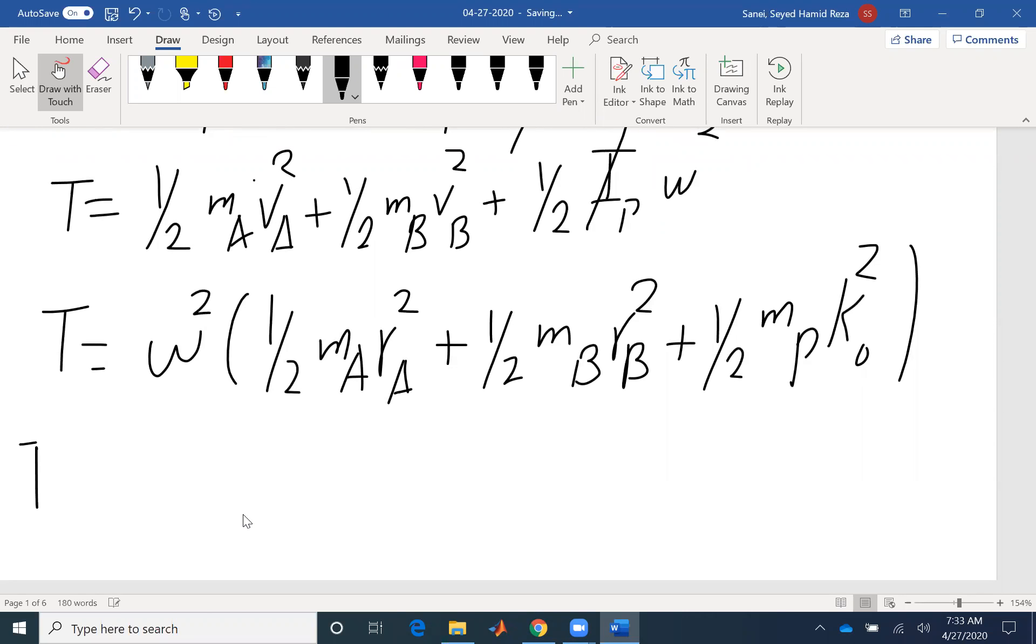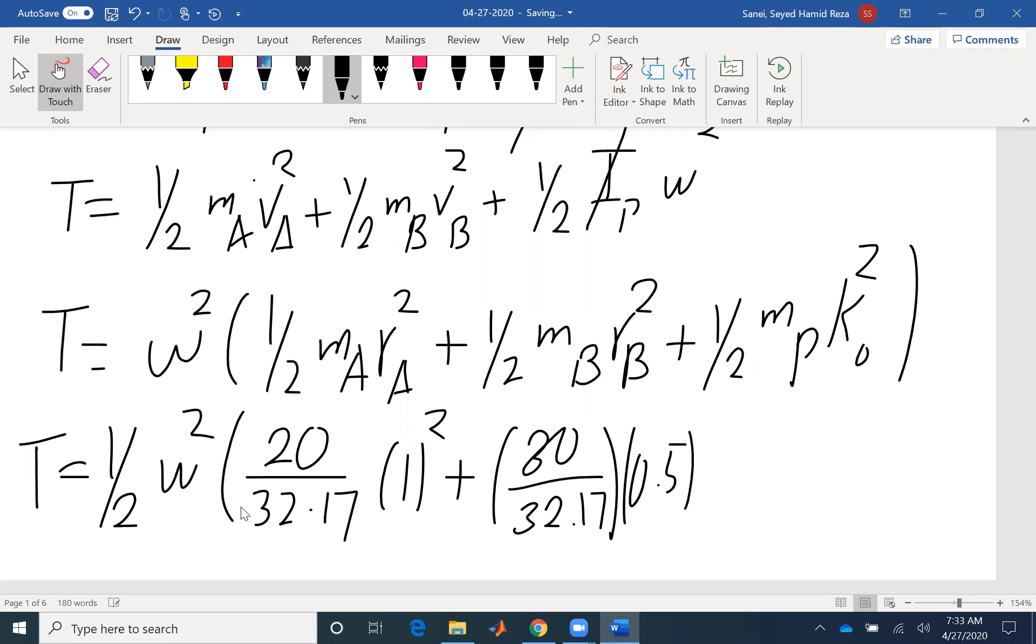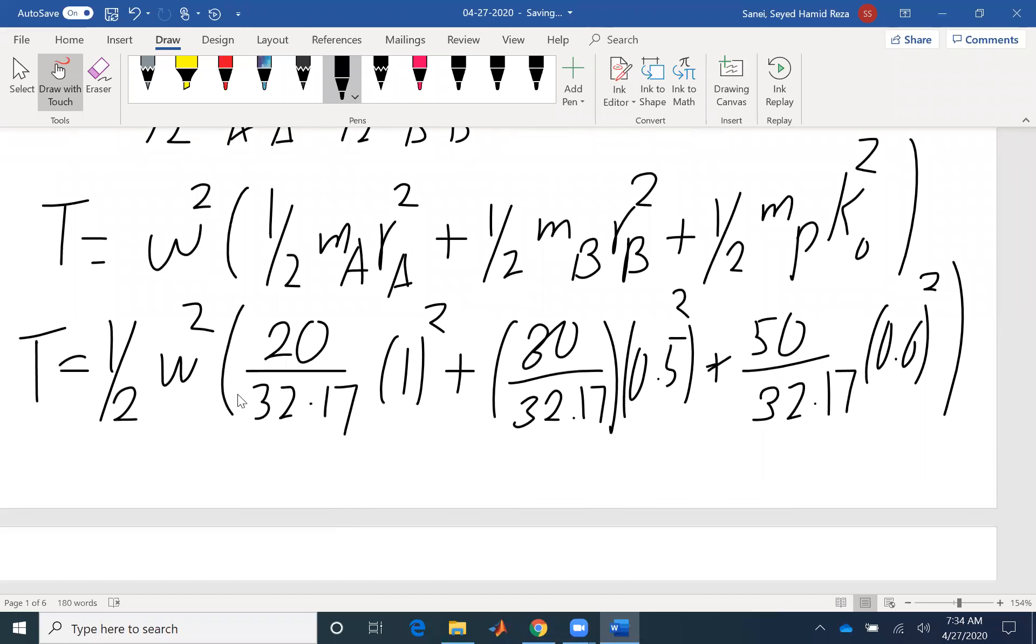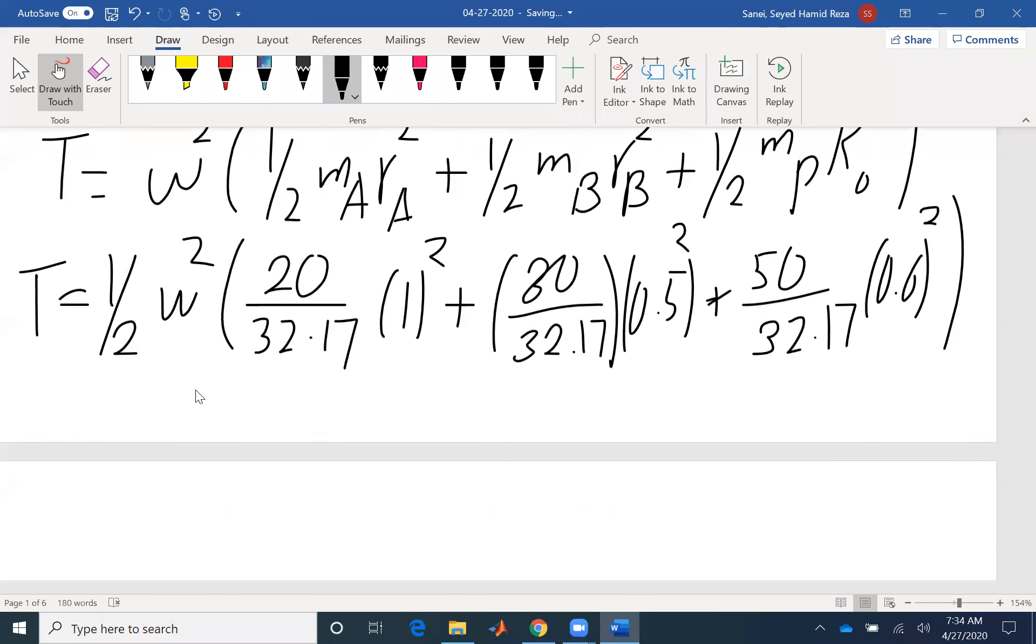So MA, the mass A would be 20 pounds, the weight, divided by 32.17. And RA would be 1. Mass B would be 30 divided by 32.17. 0.5 would be the radius. And for the disk, it's 50 pounds. So I divided by 32.17 to get slugs. And radius of gyration is given to me as 0.6 squared. So we have everything except omega. For the initial instance, we have omega as well.